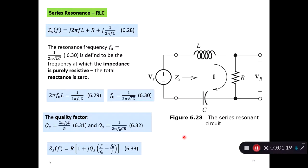Here we have the series resonance circuit again. If we want to find the impedance that the source looks into between the two circuit pins, we see that the first thing we meet is the inductor impedance, then the resistor R, and then the capacitor impedance.